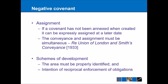The second way that a benefit can be transferred is assignment. If the covenant has not been annexed when it was created, then it can be expressly assigned to the land at a later date. The conveyance and the assignment of the covenant to a particular piece of land must be simultaneous — we have the Renals v Cowlishaw case for that. Once that assignment occurs, it effectively acts in the same way as an annexation, creating that permanent association between the covenant and the land.